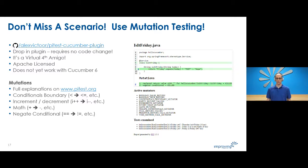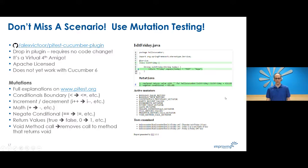The most common mutations used are: conditionals boundary, which replaces less-than with less-than-or-equals and vice versa, and same for greater-than; increment and decrement operators swap those operations; math operators replace each operator with its opposite and replace modulo with multiply; negative conditional overlaps with the conditions mutator; return values mutator returns true instead of false, zero instead of an integer, null for non-null values, or throws a runtime exception if a method returned null; void method call mutation determines if a method call is needed or if side effects need additional testing. Full explanations are at pitest.org.